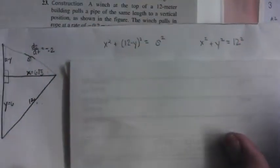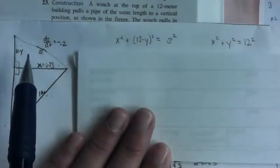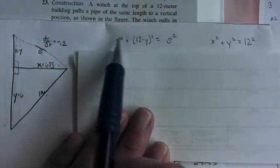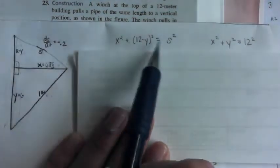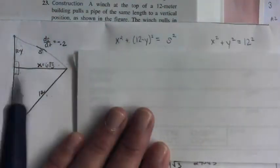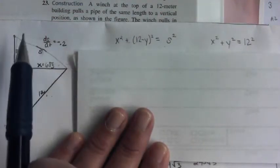So what I did was I made two Pythagorean theorems. One for this triangle. So there's my X squared plus 12 minus Y squared equals S squared. And I have no constants that I can plug into this one because all three legs here are changing.